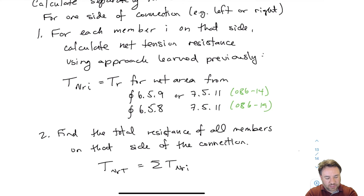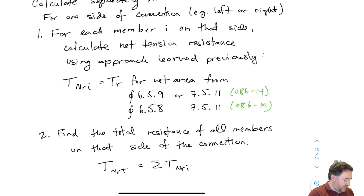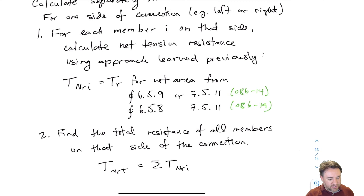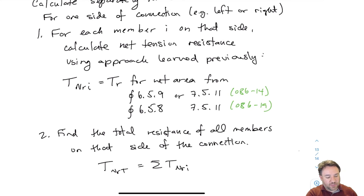In this video we looked at group tear out and net tension failure modes. In the next video we are going to finish up bolted connections by looking at the splitting failure mode, which is perpendicular to grain, and also how we sum everything up — including how to handle a combination of splitting and parallel-to-grain failure modes like net tension and group pullout.